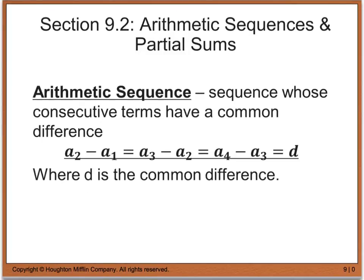An arithmetic sequence is a sequence whose consecutive terms have a common difference. As you can see, I can take my second term and subtract my first term, take my third term and subtract my second term — that's going to be the same as taking my fourth term and subtracting my third term, and so on. All of these will give us the same number, d, which is our common difference.